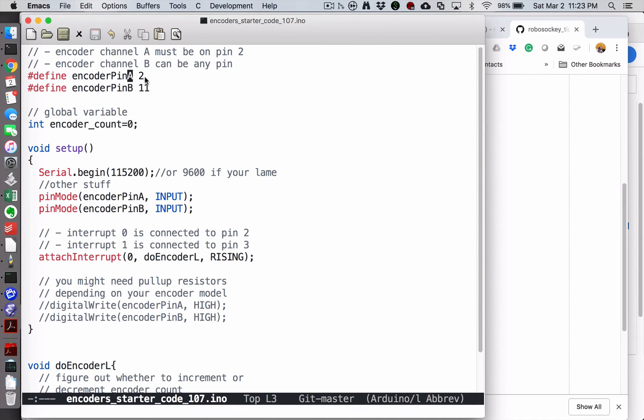As I mentioned, channel A must be connected to pin 2. Channel B could be anything. I'm choosing 11; maybe you're already using 11, so you pick any pin that you would like. I'm defining a global variable called encoder_count and I'm initializing it to zero.